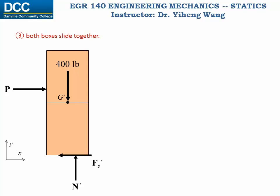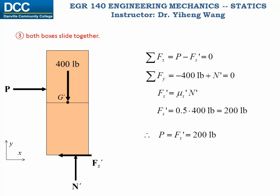The third situation — both boxes sliding together — is similar to the first, except both boxes are treated as one system. We draw the free body diagram of the entire system: total weight is 400 pounds, with normal force N' and frictional force Fs' acting at the contact surface between the boxes and the floor. Writing the two force equilibrium equations and solving gives P = 200 pounds.